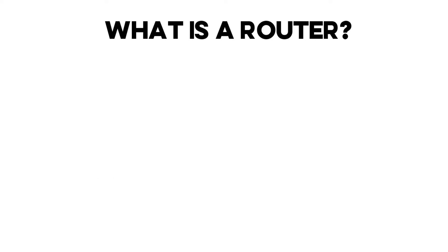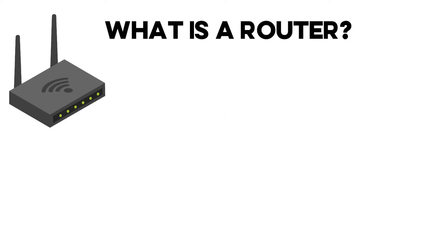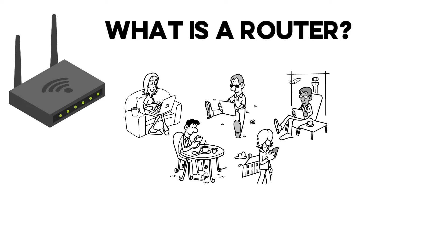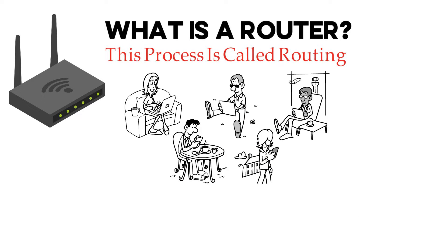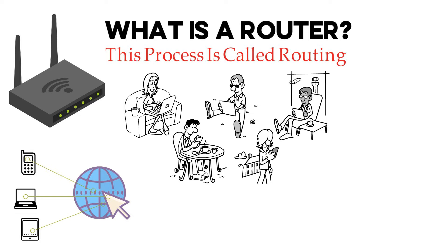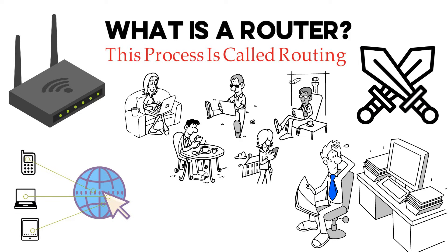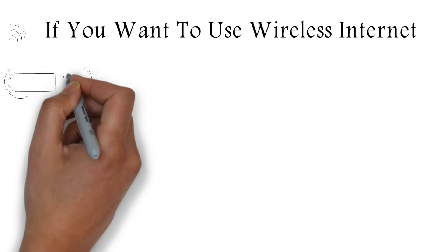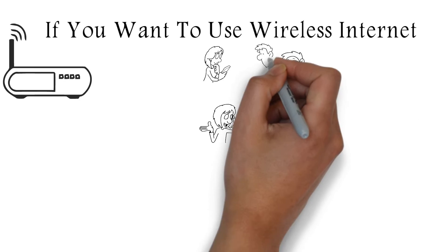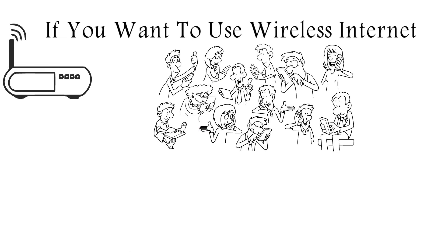What is a router? A router is a device for forwarding data packets from one or many networks — this process is called routing. It is used to connect a private network to the global network. Choosing a modem is only half the battle, because modems usually only provide connections for one wired device. If you want to use wireless internet, you need a router — a device that allows you to use the internet on multiple devices simultaneously.